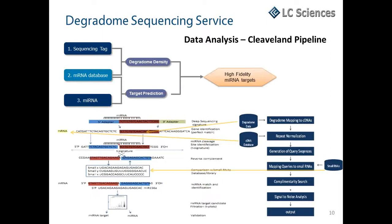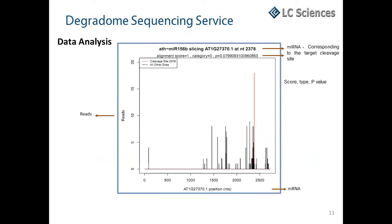We do offer data analysis as part of our degradome sequencing service, and we take advantage of the CleaveLand data pipeline. With CleaveLand, we can identify cleavage sites, compare with a small RNA database or sequencing results, and generate high-fidelity microRNA targets. Confirmed microRNA targets are presented in the form of target plots, or T-plots, which display the number of reads for the RNA transcript and read abundances plotted along the length of the transcript. T-plots identify the cleavage site and its corresponding microRNA, and score the transcript into one of five target categories based on the abundance of reads at the cleavage position.